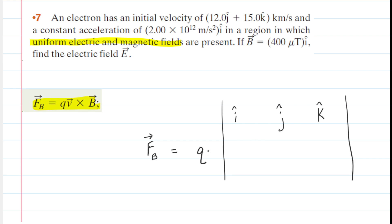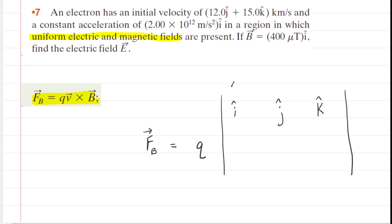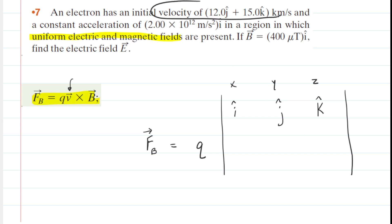We put the charge on the outside of this cross product setup, and then we have i-hat, j-hat, and k-hat, which correspond to the x, y, and z directions. The velocity comes first in the cross product, so we fill in the x, y, and z components of the velocity. There is no i-hat component, so we put zero. For the j-hat or y component, we have 12 kilometers per second, which is 12,000 meters per second. For the k-hat or z component, we have 15,000 meters per second. We omit units for clarity.